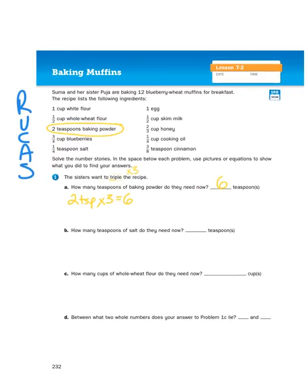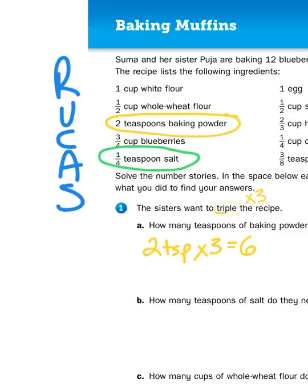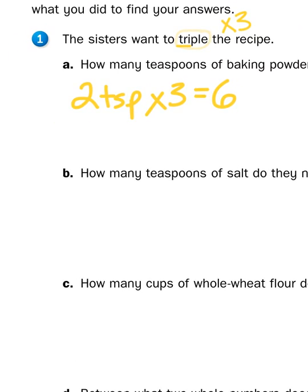Easy peasy, right? Well, it gets a little trickier when we get to problem 1b. That's because they are asking us to triple the amount of salt. If you've ever added too much salt to something, you know that's not a good thing. So we want to make sure we are exact. And they are only asking for one-fourth of a teaspoon of salt per dozen. So we're going to multiply one-fourth teaspoon times three.